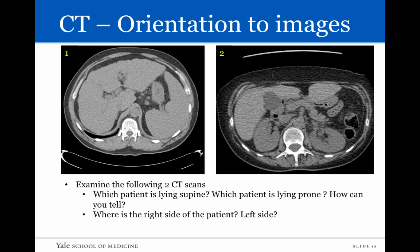Now let's orient ourselves to CT images by looking at CT images number one and number two. Try to answer the following questions: which patient is lying supine, which patient is lying prone, how can you tell, and what is the right side and what is the left side of the patient?